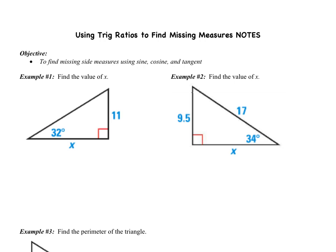Welcome to today's video, which covers using trig ratios to find missing measures. We are going to find missing side measures using sine, cosine, and tangent. Looking at example number one, it says find the value of x. In each of these problems, I'm going to give you some sides and at least one angle, and you're going to have to find a missing side.